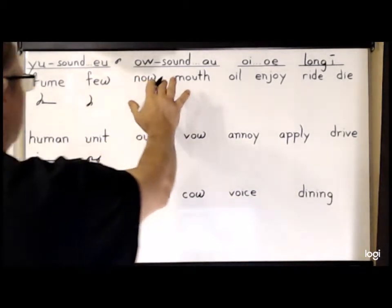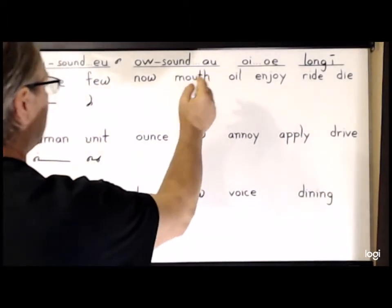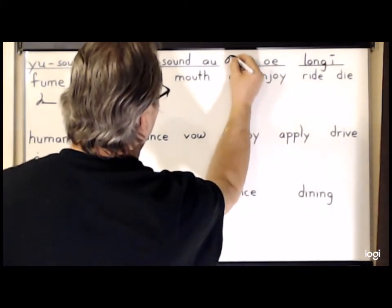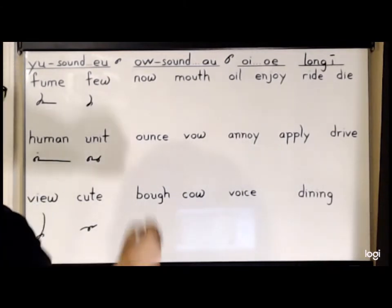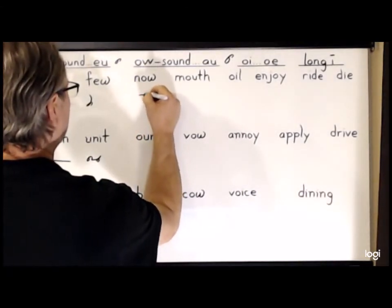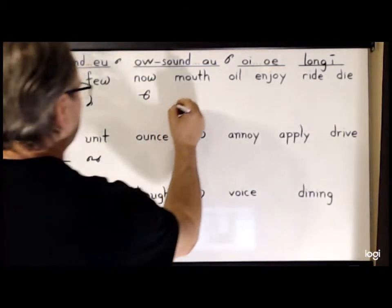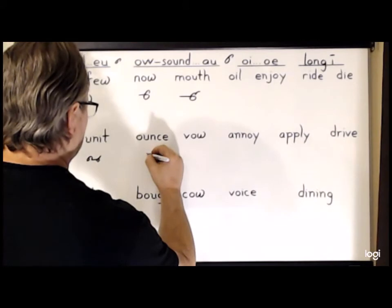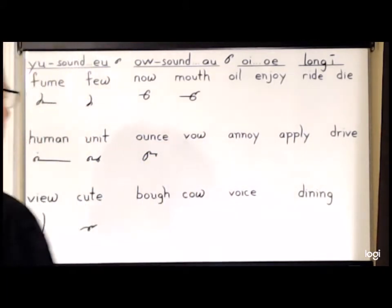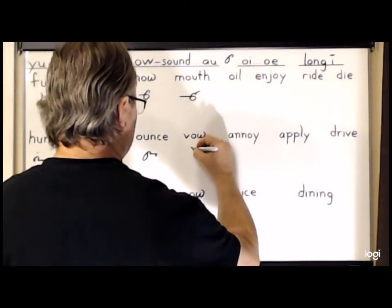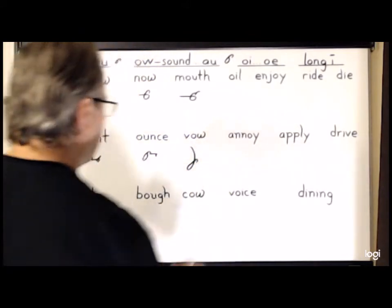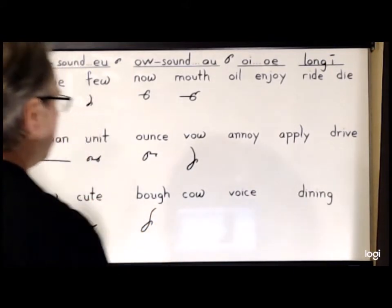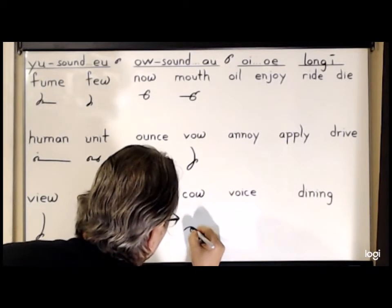The OW sound, or 'ow' sound, is represented by the large circle A and the U hook. So in words like 'now', which will be N, large circle for A, and the U. For 'mouth', it will be M-A-U-T-H. 'Ounce' will be A-U-N-S. For 'vow', it will be V-A-U. For 'bow', it will be B-A-U. And lastly, 'cow', K-A-U.